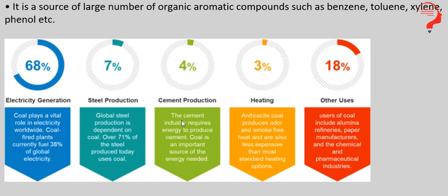Next is cement production — the cement industry requires energy to produce cement, aur uske liye log coal ka use karte hain. For heating, anthracite coal produces odor- and smoke-free heat and is also less expensive than most standard heating options. Burning ke liye bhi coal use mein aati hai — kyunki coal odorless hoti hai, jisme jalane par koi gandi smoke nahi nikalti aur koi gandi smell nahi aati. Ghar mein khana banane ke liye bhi kai jagah chule chalte hain jo bahut zyada coal use karte hain — dhuan bahut kam uthta hai, smell bilkul nahi aati, aur sabse less expensive hai.